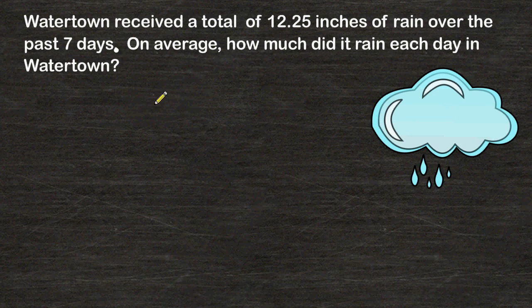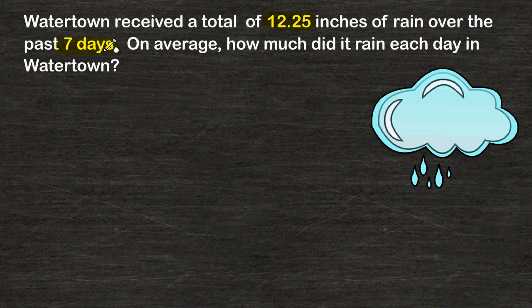In this word problem, it says that Watertown received a total of 12.25 inches of rain over the past 7 days. On average, how much did it rain each day in Watertown?